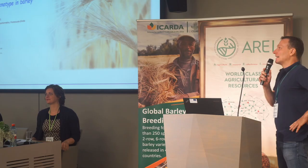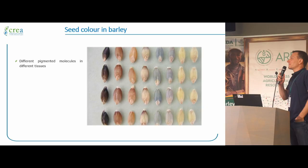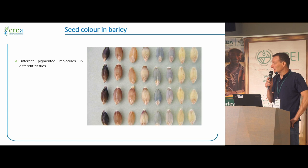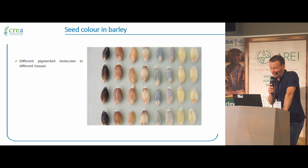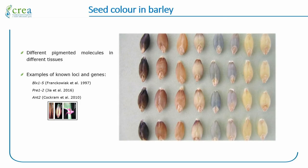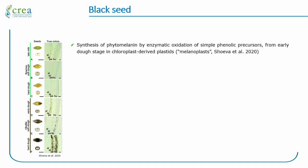The third talk is about color in barley. There is wide variation in this trait due to accumulation of different pigments in different tissues — important for nutritional values and for protecting seeds against biotic or abiotic stress. The black seed phenotype is due to accumulation of phytomelanins by oxidation of simple phenolic compounds. This accumulation starts at early grain development stages in chloroplast-derived plastids called melanoplasts.